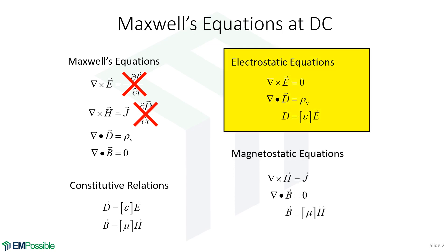The first set is describing electrostatics, and we see we have the curl of E equals zero, divergence of D equals rho V, and we have the constitutive relations for the electric fields.